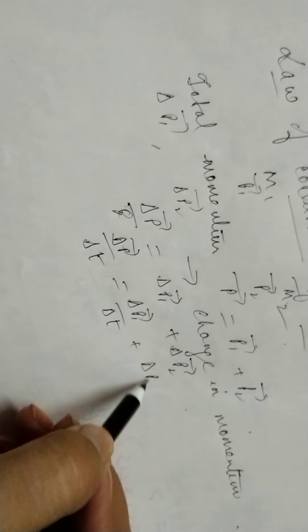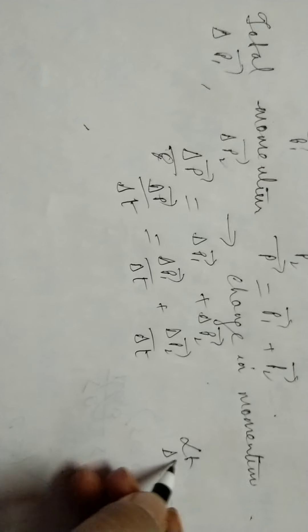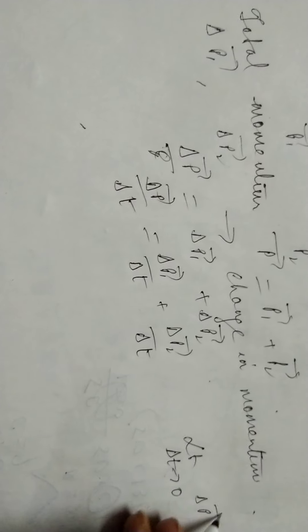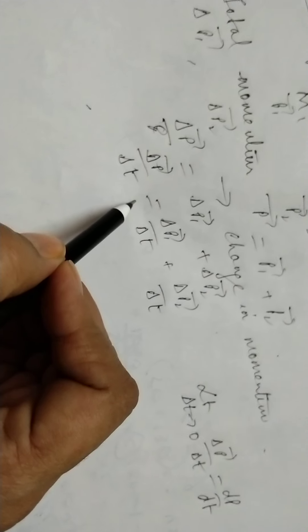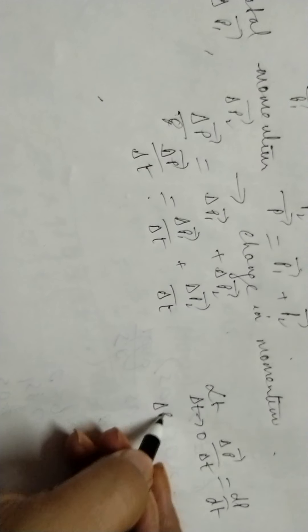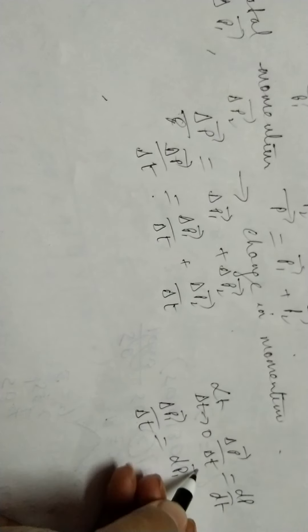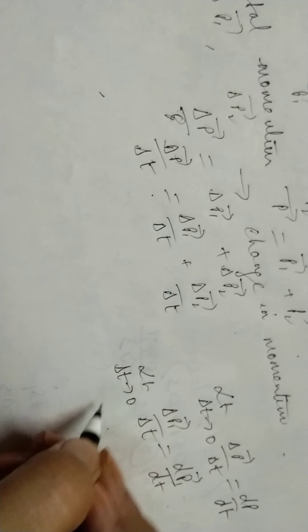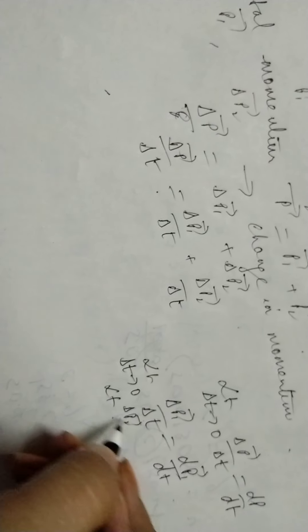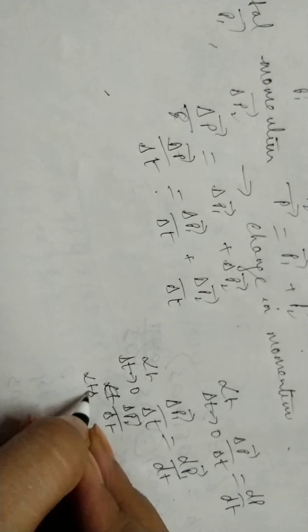We get delta p1 vector by delta t plus delta p2 vector by delta t. Taking the limit as delta t tends to 0, delta p vector by delta t becomes dp by dt. Similarly, delta p1 vector by delta t becomes dp1 vector by dt, and delta p2 by delta t becomes dp2 by dt.